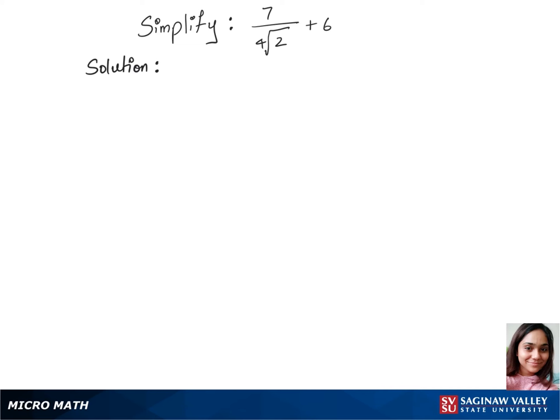We'll simplify this question by first adding up those two parts. So that's 7 plus 6 times 4th root of 2 over 4th root of 2. Now we have one denominator.